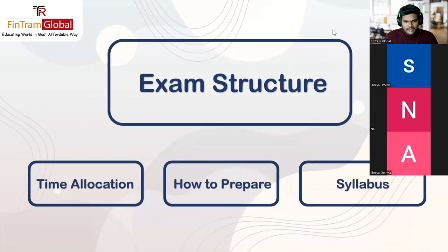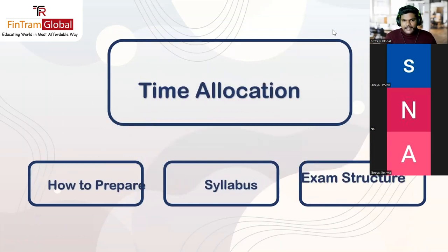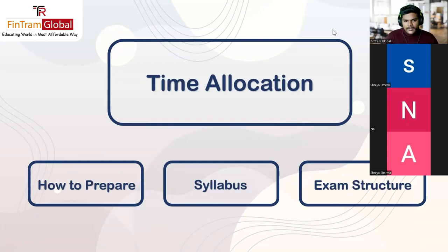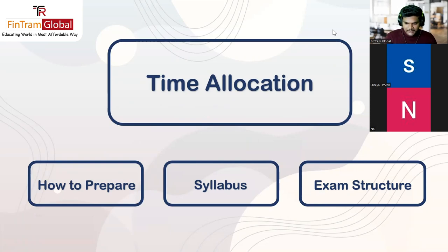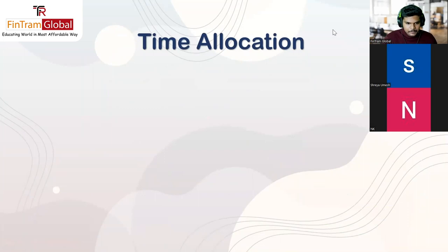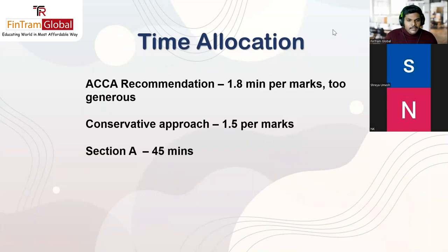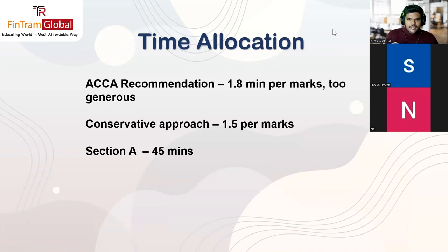Now, the time allocation strategy. ACCA recommends 1.8 minutes per mark. However, a common comment from Double A students is that it's really hard to complete the exam in time, because it takes time to think through the answer and then type it in the response area. Time management is a common issue for the Audit and Assurance exam, which is why we need a specific time strategy.